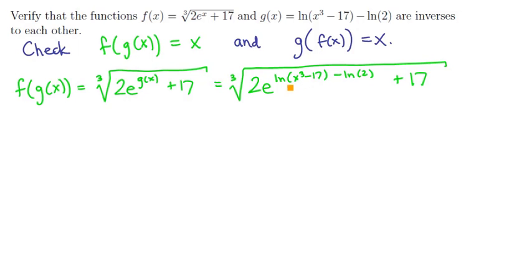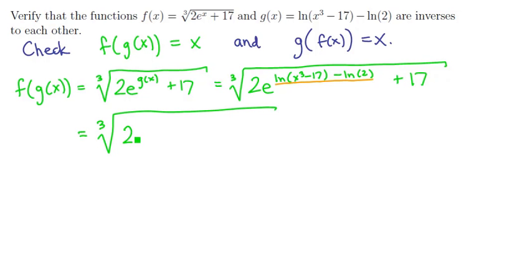Notice that you have a difference of logarithms up here, and we have rules of logarithms that allow us to compress that. We're going to have the cube root of 2 times e to the power — this is just going to be ln of the first argument divided by the second one. So x cubed minus 17 will be the numerator, and 2 will be the denominator. And then don't forget the plus 17.